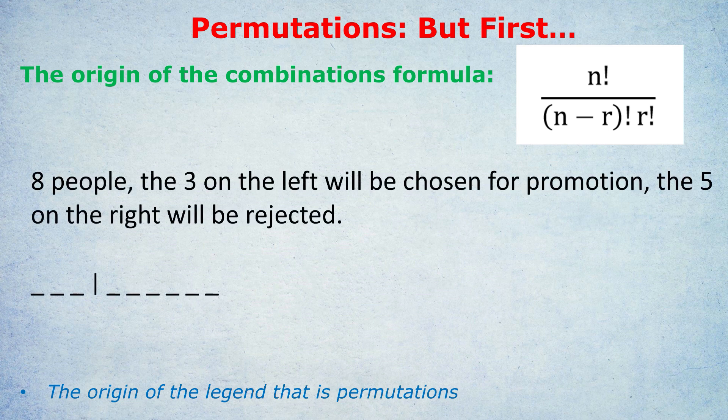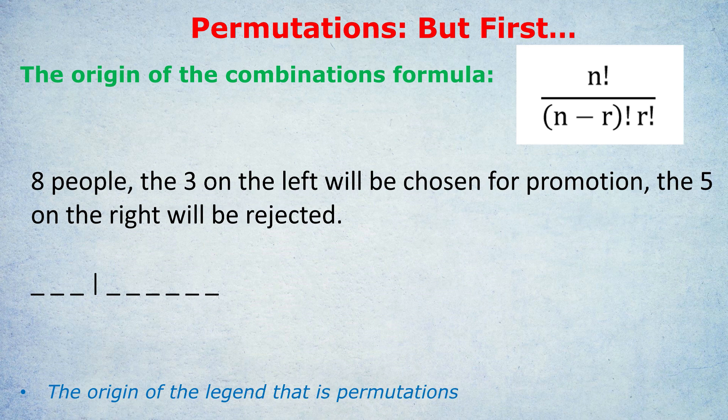Imagine this situation. We have eight people and we're going to randomly line them up in a row. And then the three people on the left will be chosen for promotion, and the five people unlucky who are on the right will be rejected.